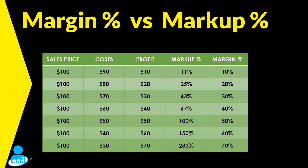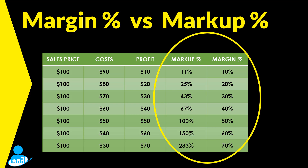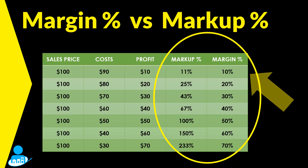Here is a simple chart that takes a $100 item and shows you the different costs you could have, the profit you make, and how the markup and the margin are very different from each other. The bigger the costs and profit change, the bigger that gap between the two becomes. The most important line on here is going to be the margin percentage. Your profit and loss statement — your P&L — is done off of a percentage of sales. Therefore, your margin is the column we need to look at because that's actually the one that you track.